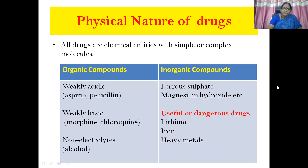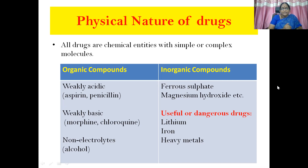Then, physical nature of drugs. All drugs are chemical entities with simple or complex molecules. In this category we have organic compounds as well as inorganic compounds. Organic compounds form the majority of drug molecules, and they can be categorized as weakly acidic — for example aspirin and penicillin — weakly basic molecules like morphine and chloroquine, and non-electrolytes like alcohol. Inorganic compounds include common examples like ferrous sulfate and magnesium hydroxide.